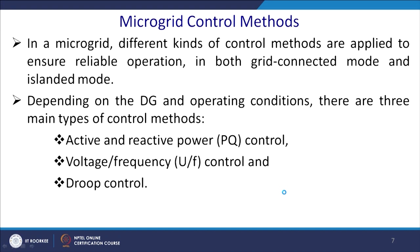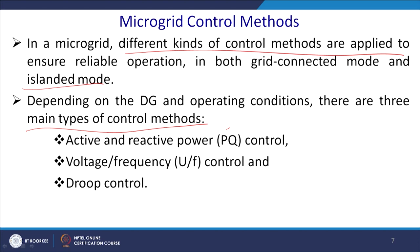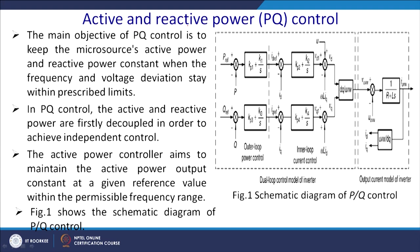In a microgrid, different kinds of control methods are applied to ensure reliable operation in both grid-connected mode and islanded mode. Depending on the distributed generation and operating conditions, there are mainly three types of control: active and reactive power flow control (PQ control), voltage-frequency control, and droop control. Droop control can be both AC and DC.